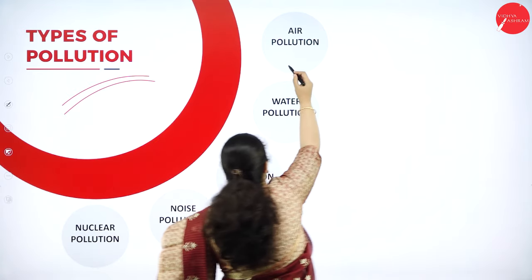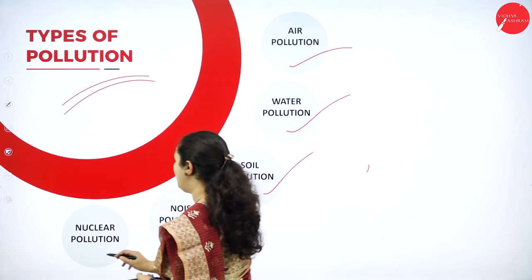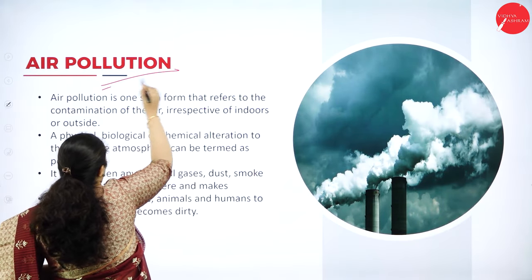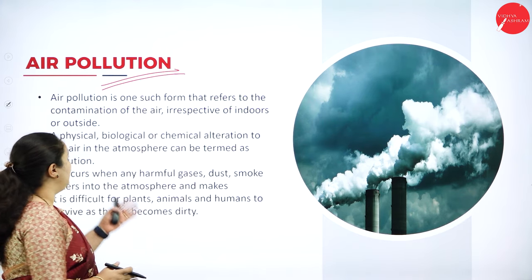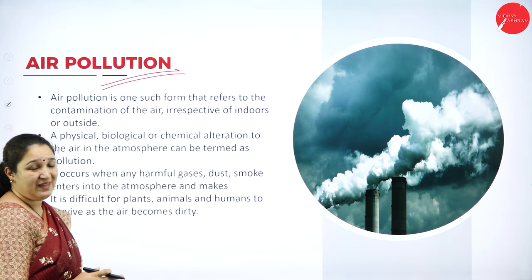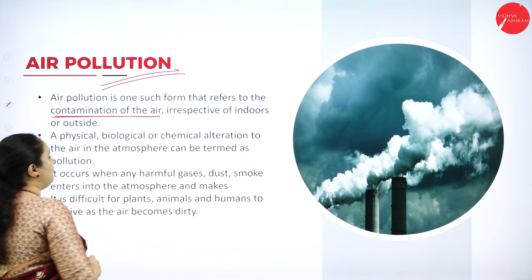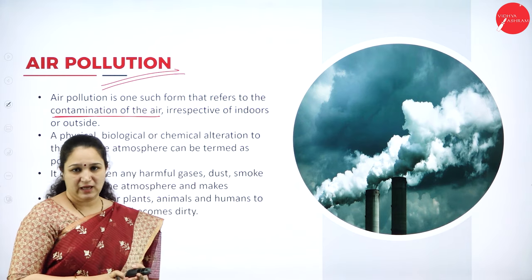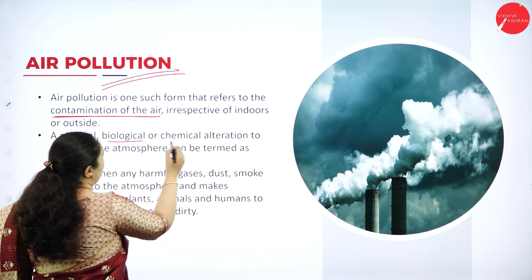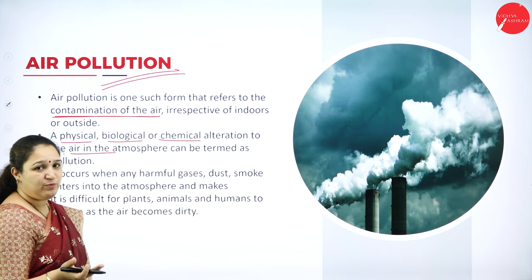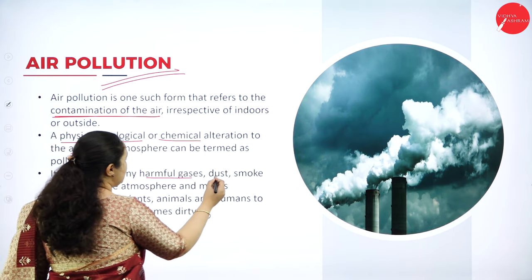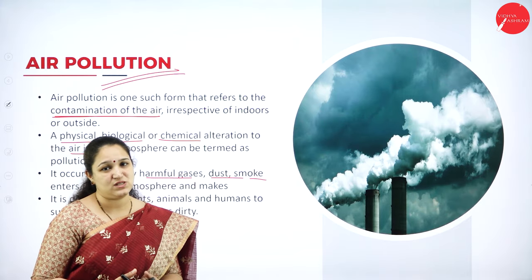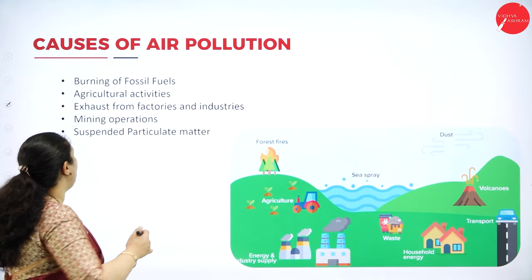The different types of pollution we will study in this chapter are air pollution, water pollution, soil pollution, noise pollution, and nuclear pollution. First we go into air pollution. Air pollution refers to the contamination of the air, whether indoors or outdoors. A physical, biological, or chemical alteration to the air in the atmosphere is termed air pollution. It occurs when harmful gases, dust, and smoke enter the atmosphere and make life difficult.